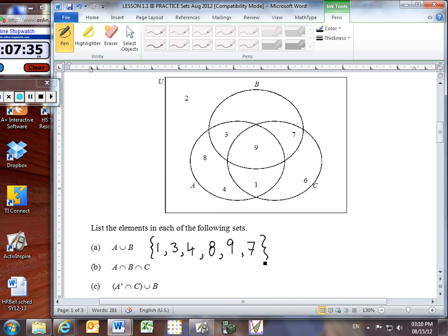Part B wants us to find the numbers that are in A intersection B intersection C. What this means is that we're looking for the numbers that are in A and B and C all at the same time. So if you look at your diagram, can you see any numbers that are inside the A circle and they're inside the B circle and they're inside the C circle? Is there any number inside all three circles? Yes, there is one: the 9. So that is the only element that belongs to all three of these sets A, B, C simultaneously.